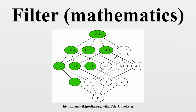For any subset T of P, there is a smallest filter F containing T, called the filter generated or spanned by T. It is constructed by taking all finite intersections of T, which then form a filter base for F. This filter is proper if and only if any finite intersection of elements of T is non-empty, and in that case we say that T is a filter sub-base.